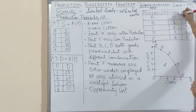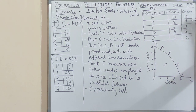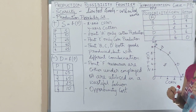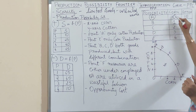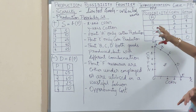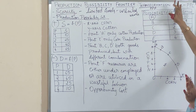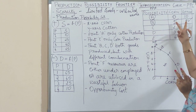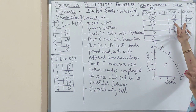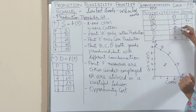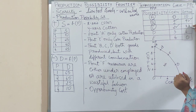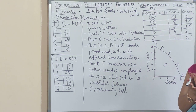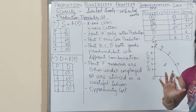Here you have corn — 0, 1, 2, 3, 4 — how much you are producing. Cotton is 10, 9, 7, 4, and 0. The resource is very much limited. In option A, you produce 0 corn — all resources are fully employed for cotton. In option B, you produce 1 unit of corn and 9 units of cotton. In combination C, you increase corn production and reduce cotton production. The simple reason: the resource available is very much limited, so if I want to produce more corn, I have to sacrifice cotton.